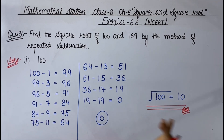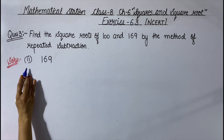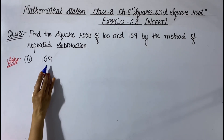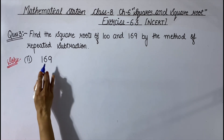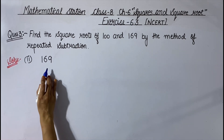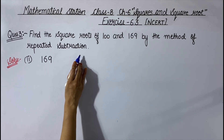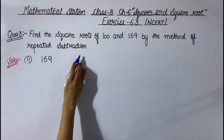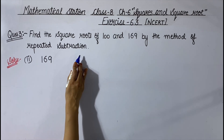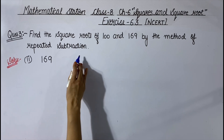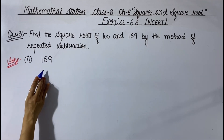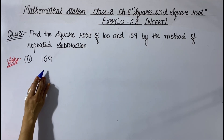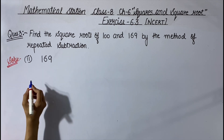Now coming to our second part. The second one is 169. We have to find the square root of 169 by using the repeated subtraction method. In the repeated subtraction method, we have to subtract successive odd natural numbers. So from 169 we will subtract odd numbers, and we start from 1.